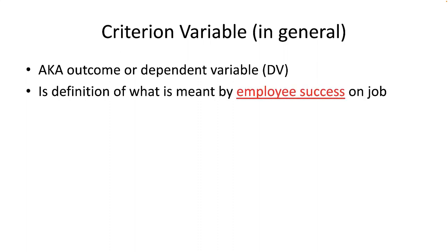Okay, now we're going to look at different types of variables using the nomenclature of statistics. First, we have the criterion, which is also known as the outcome or dependent variable. For HR selection, the ultimate criterion is employee success.